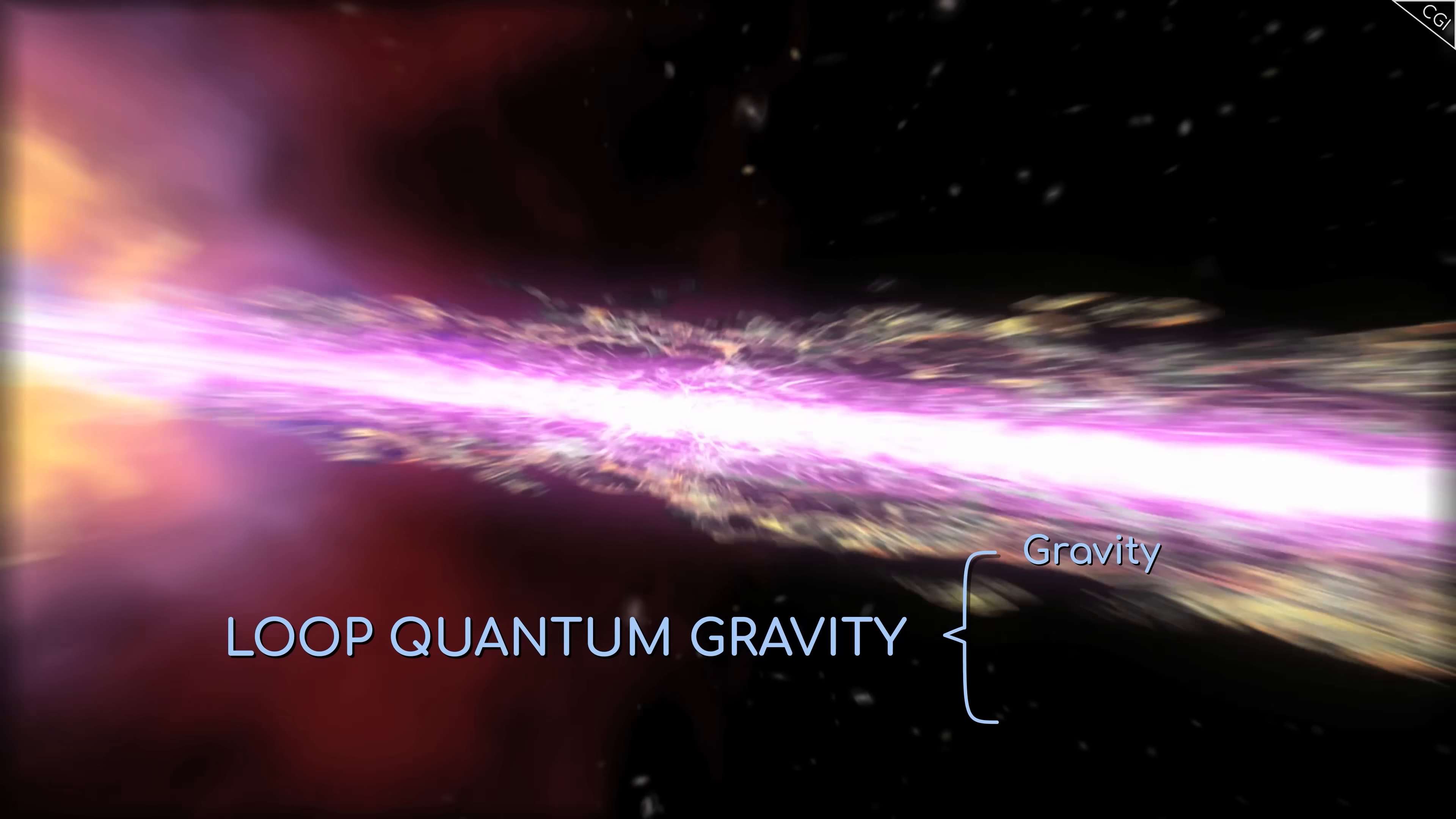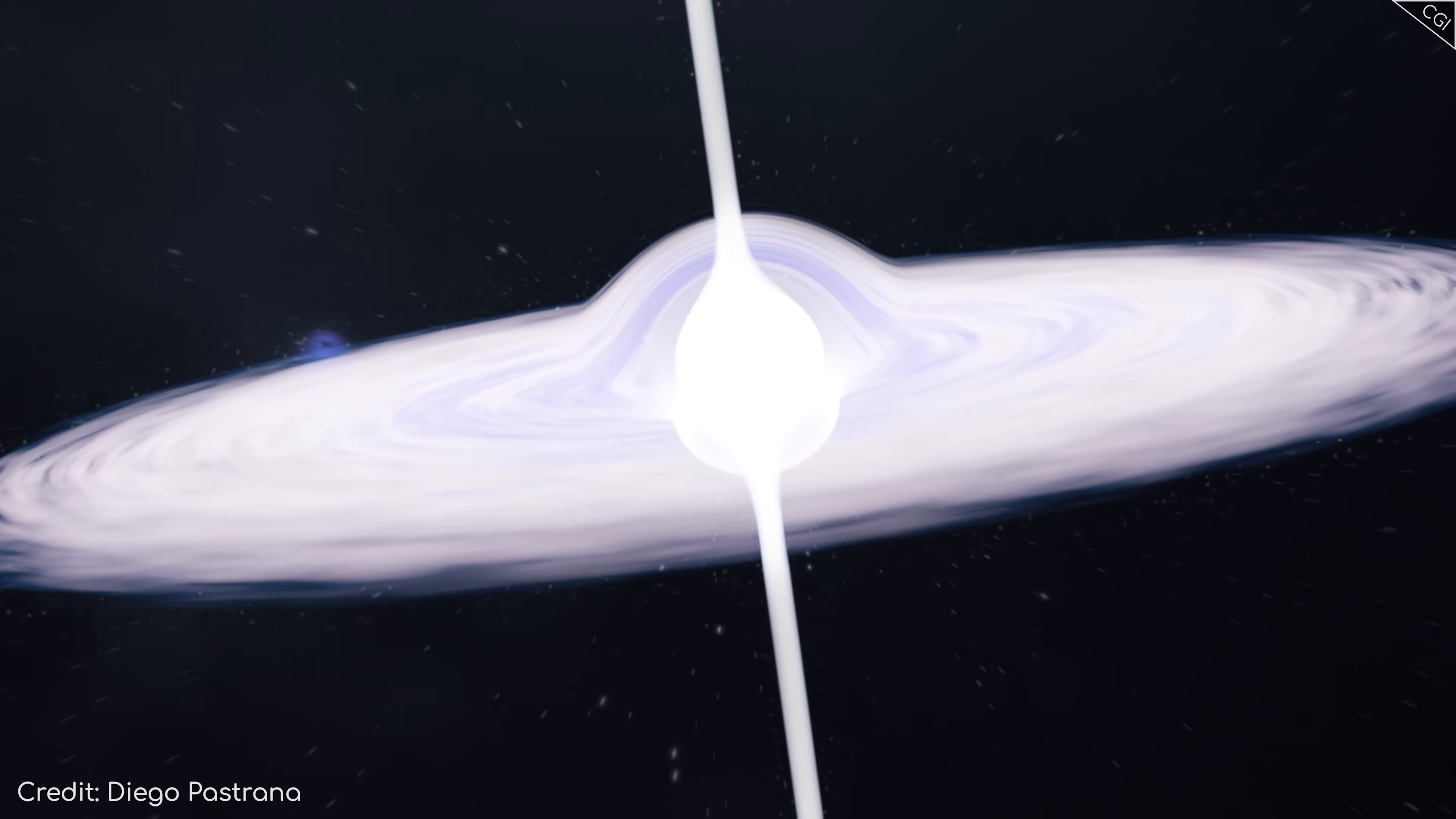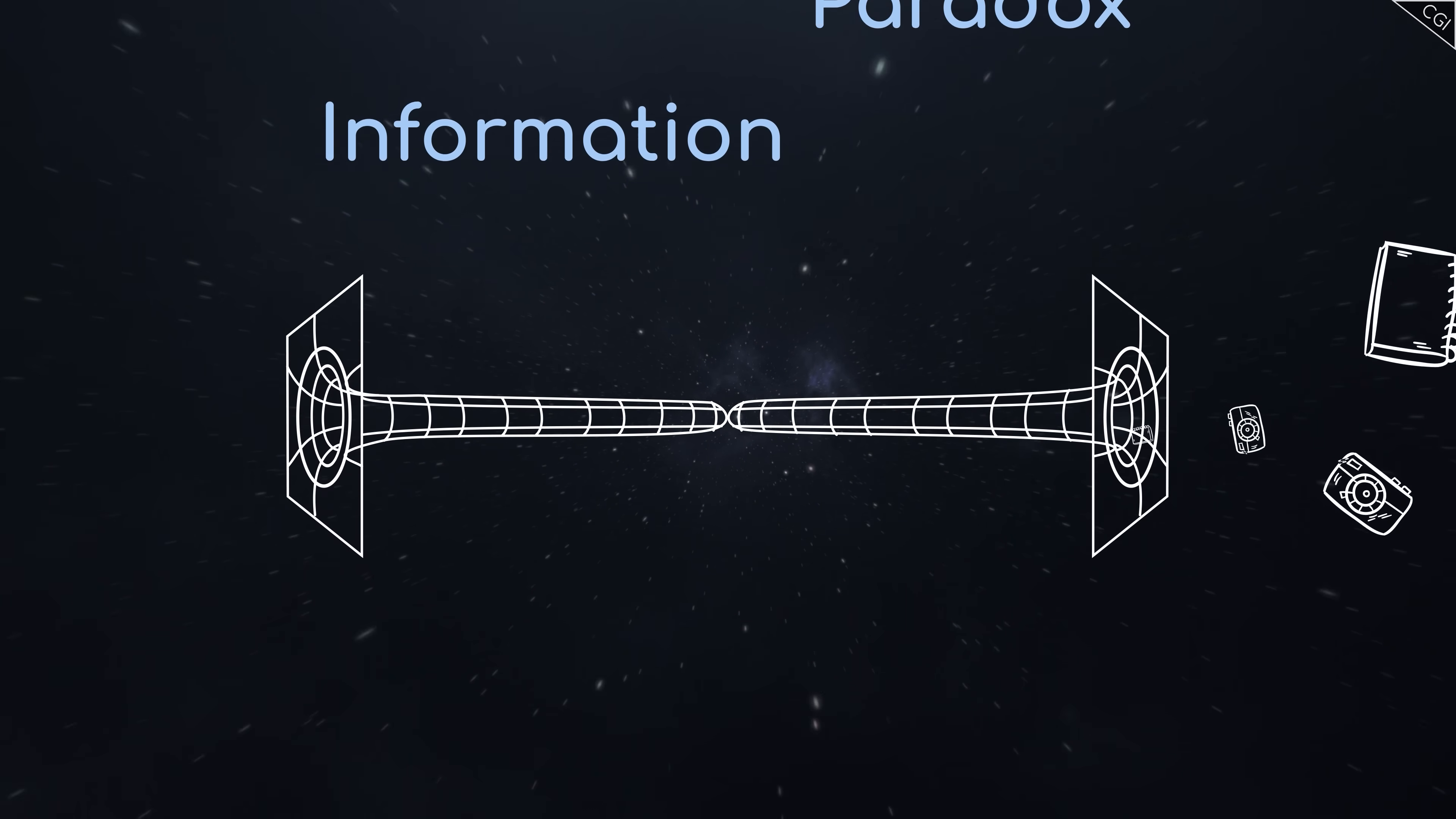This is where loop quantum gravity comes in, a proposed link between gravity and quantum mechanics, in which space itself is made of discrete loops. In short, the equations of loop quantum gravity predict that instead of continuing to shrink even smaller than the Planck mass, such a tiny black hole is instead more likely to quantum tunnel into a white hole, spewing out its contents back into the universe over an extended period of time. Incredibly, even though this white hole will be similarly small and light, it can contain an enormous amount of entropy, because its interior geometry will have been stretched into a thin tube with an extremely large volume. This store of entropy could potentially open a pathway for any information that falls into a black hole to be recovered in the distant future, solving a decades-long problem in theoretical physics known as the information paradox.